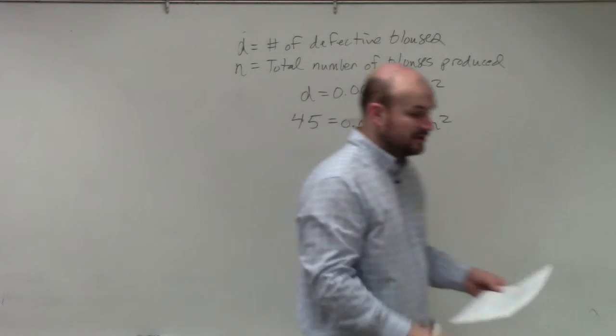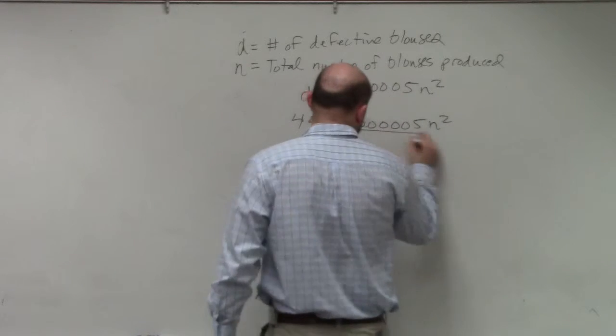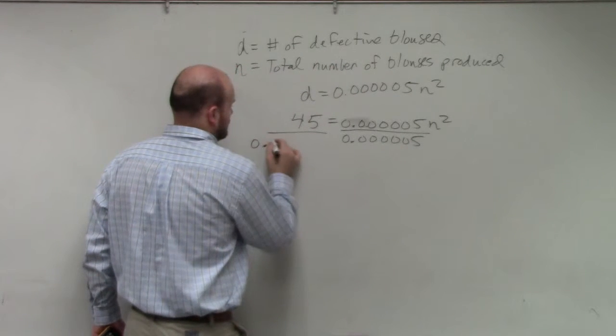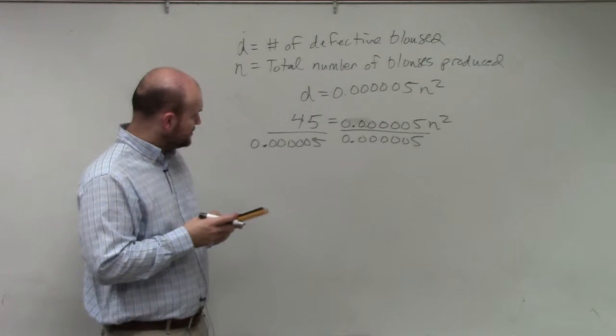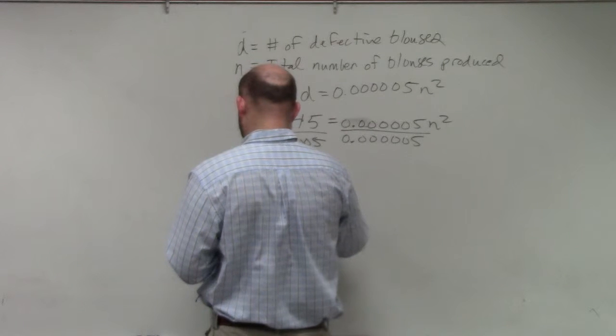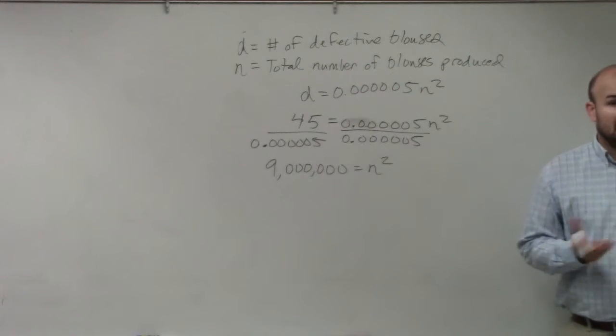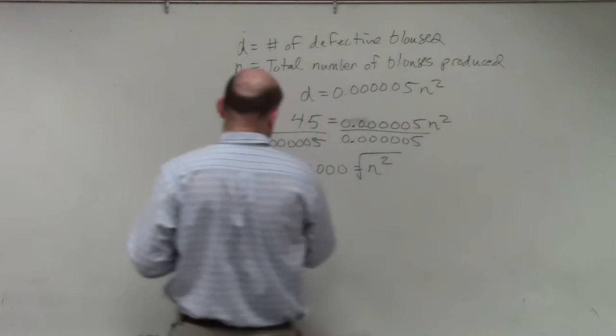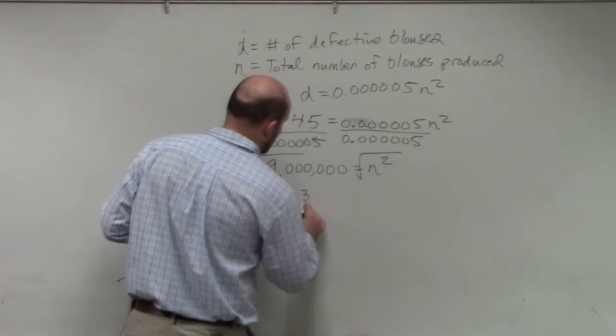Now you probably would need a calculator for this. So now, all I simply need to do is solve. Well, to solve for n, I need to divide. So I do 45 divided by 0.123455. And I get 9,000,000. Now, how do you solve for n? How do we undo squaring? We need to take the square root. So you could do square root, second answer, and you have plus or minus 3,000.